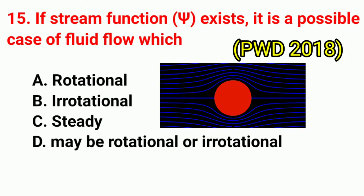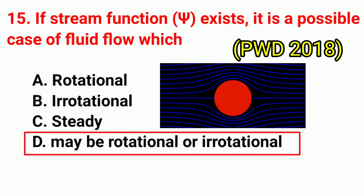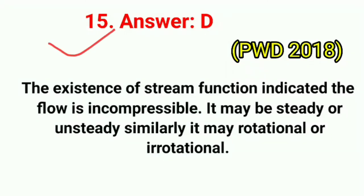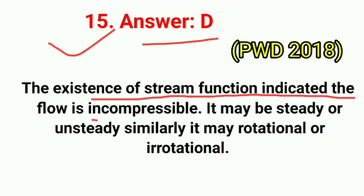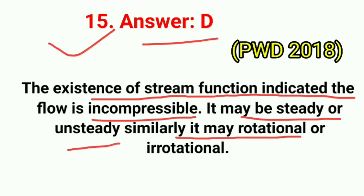Question No. 15. If stream function phi exists, it is a possible case of fluid flow which? Correct answer is option D: may be rotational or irrotational. The existence of stream function indicates the flow is incompressible. It may be steady or unsteady, and similarly it may be rotational or irrotational.